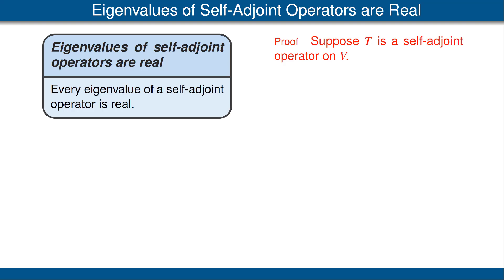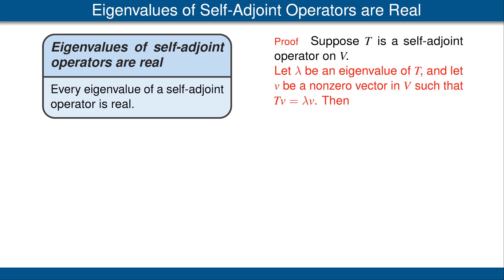Let's look at the proof. Suppose T is a self-adjoint operator on our inner product space V. Let lambda be an eigenvalue of T, and suppose v is a non-zero vector such that T(v) equals lambda·v. Then lambda times the norm of v squared equals lambda times the inner product of v with v. Moving lambda inside the first slot gives the second equation. Since lambda·v equals T(v), we get the third equation. For the fourth equation, we flip T to the other side — it should become T*, but our hypothesis is that T is self-adjoint, so T equals T*.